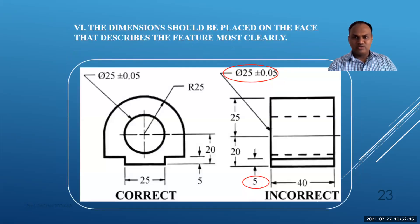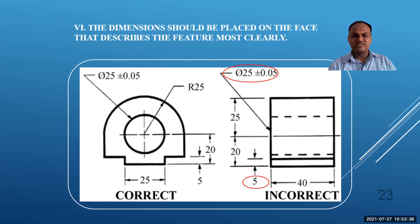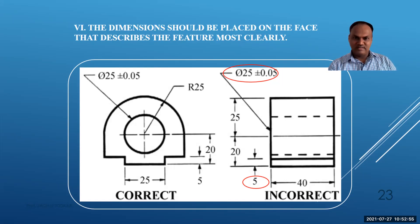Rule 6 — dimensions should be placed on the face that describes the feature most clearly. For example, if a circle is completely visible in one view, the diameter dimension should be given there. If a slotted part is clearly visible in one view but not another, give the dimension in the view where it is fully visible. Always dimension where the particular portion is visible.